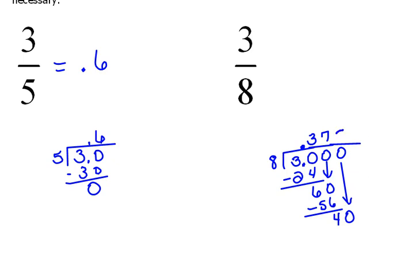Now eight will go into forty five times. Five times eight would be forty. So now we have no remainder. Three-eighths is equivalent to .375 in decimal form.